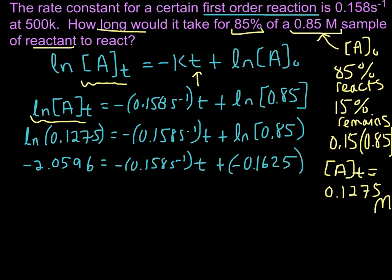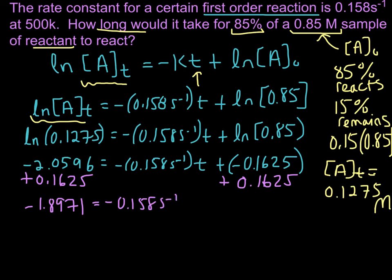The important thing—watch your signs. We have a negative number for natural log of [A]₀. Now let's add 0.1625 to both sides. Negative 2.0596 plus 0.1625 gives us negative 1.8971. And we still have our rate constant, negative 0.158 seconds inverse times time.